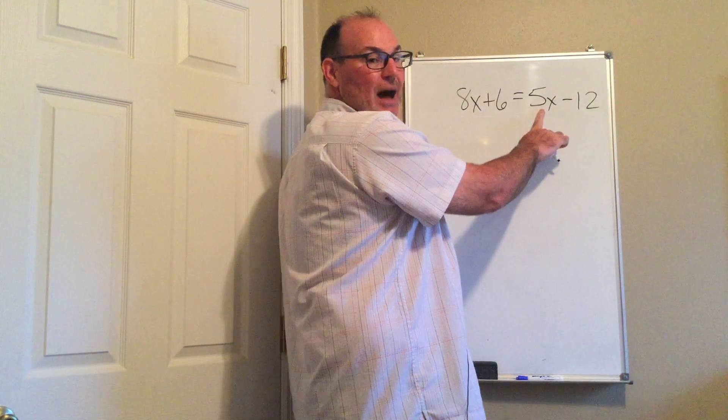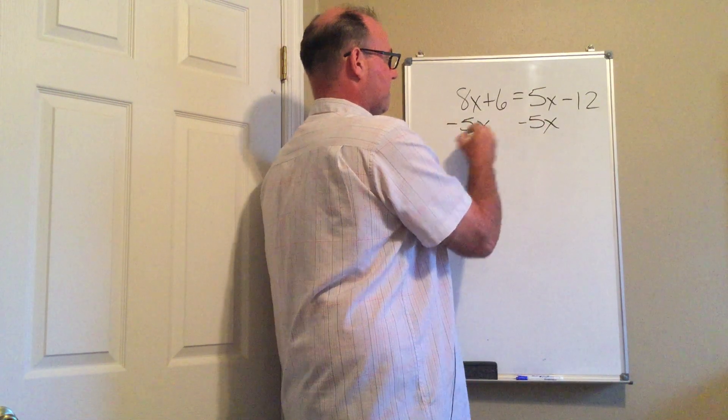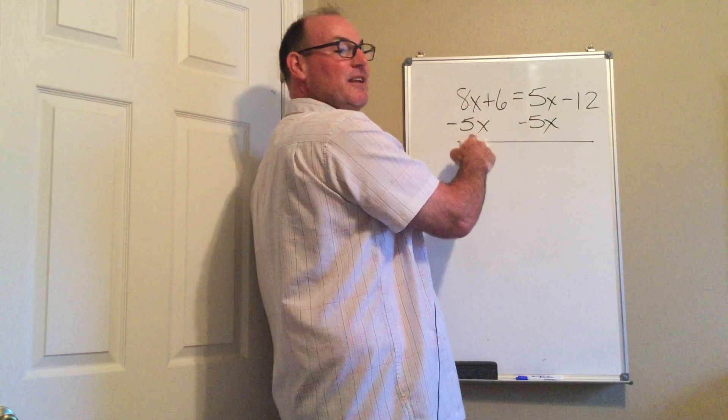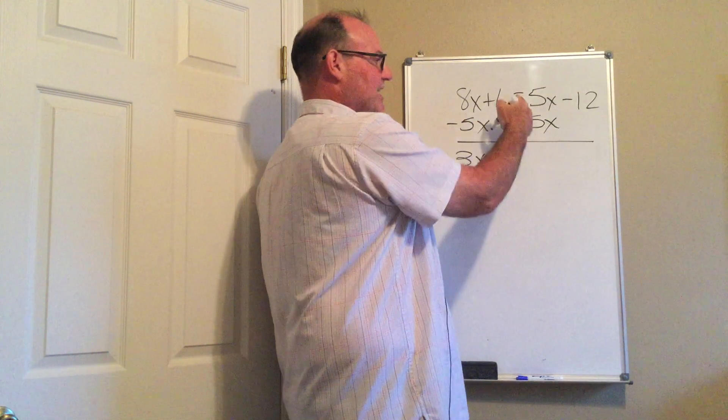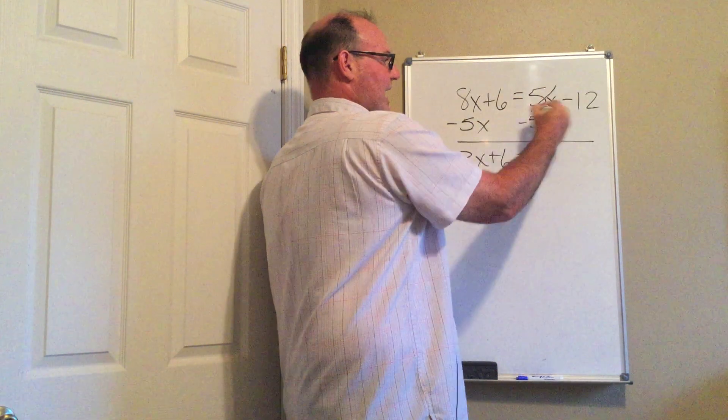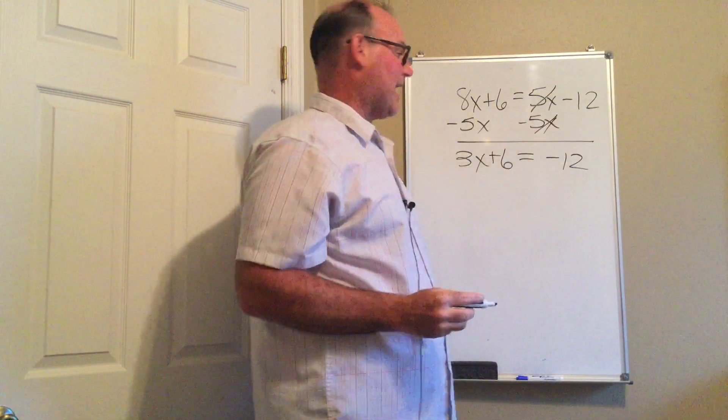So first, for the X's, this is a positive 5X, so I will subtract it from both sides. The 8X minus 5X is 3X. I've done nothing with the 6. The equal sign stays in the middle, and I've got a negative 12. Signs are important, make sure you hang on to that negative.